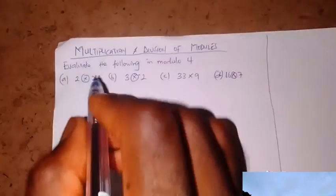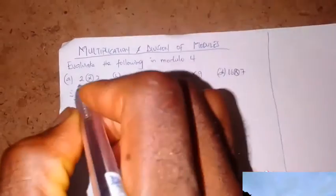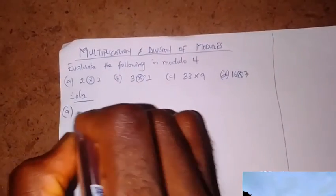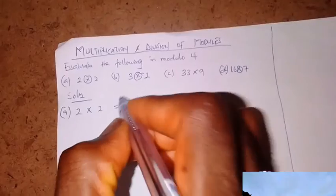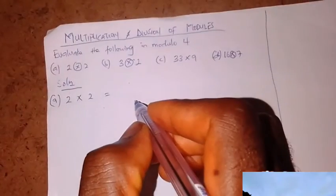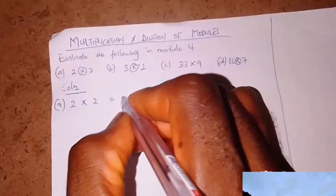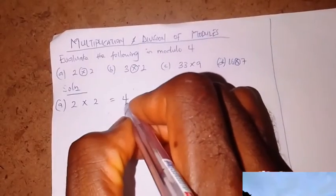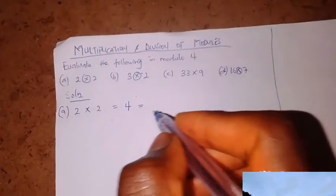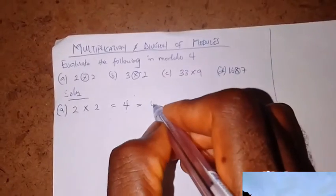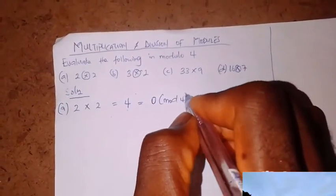This is the first question. Solution: we have to evaluate 2 times 2 in modulo 4. The idea is just to multiply: 2 times 2 is 4. Then you find it in modulo. What is 4 in modulo 4? That's 0. So the answer is 0.